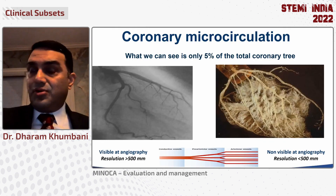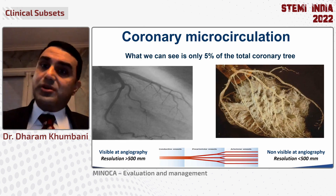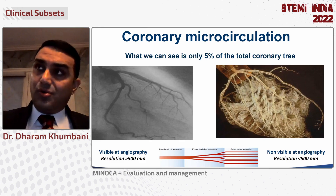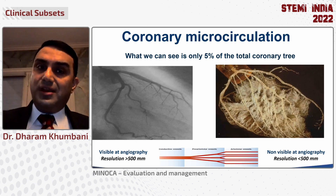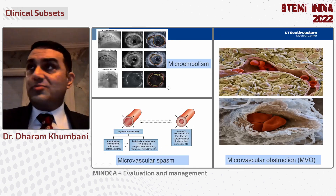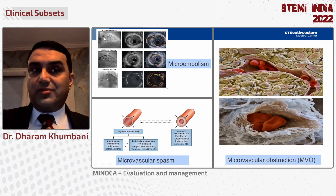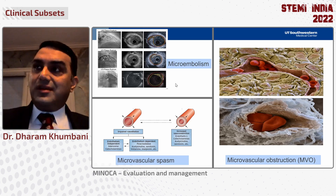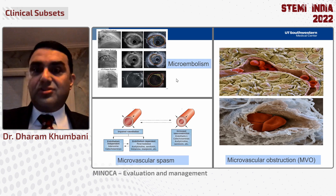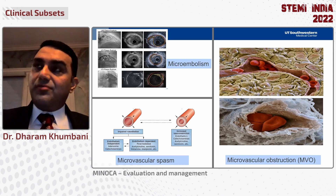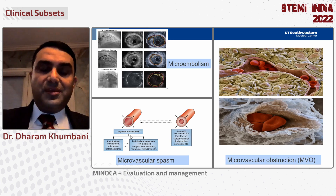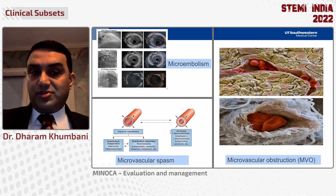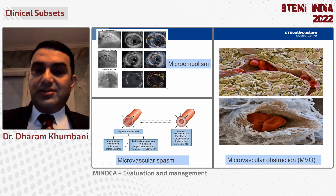The coronary microcirculation is very important. What we see angiographically is only 5% of the total coronary tree — there's a very large network of arterioles and capillaries that we're just not seeing, but that can be equally important in this pathophysiology. Microembolism can occur when plaque rupture in an angiographically normal segment embolizes downstream and causes obstruction, resulting in an MI. There's also the well-known phenomenon of microvascular obstruction with platelet-rich thrombi plugging the microcirculation, and microvascular spasm from an imbalance between vasodilation and vasoconstriction.